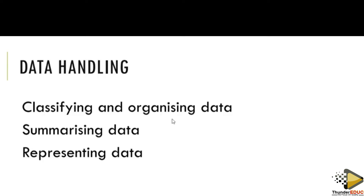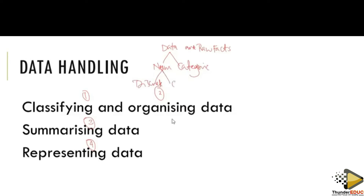When we look at data handling, the steps are: classify, organize, summarize, represent, and the fifth one is to create questions. Data is raw facts, and data is split into two: either numerical or categorical. Numeric data is also split into two: discrete or continuous. We shall also look at measures of spread.